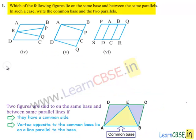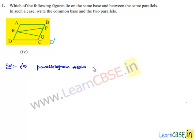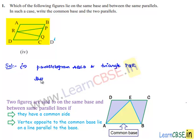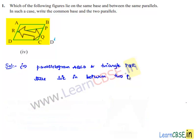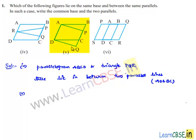Moving on to the fourth bit — we have two figures: parallelogram ABCD and triangle PQR. These lie between two parallel lines AD and BC, but they do not have any common base.